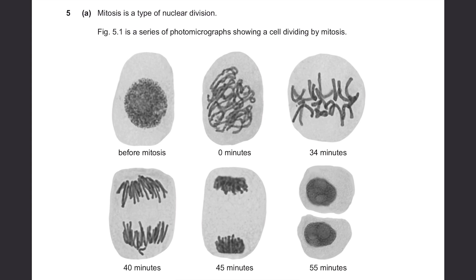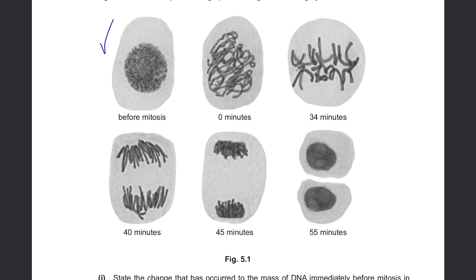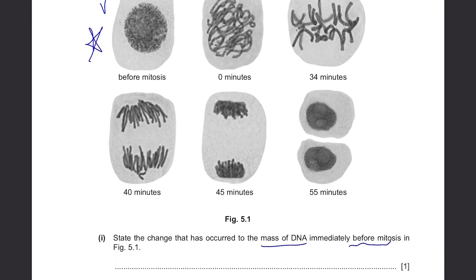Question 5, part A. Mitosis is a type of nuclear division. Figure 5.1 is a series of photomicrographs showing a cell dividing by mitosis. State the change that occurred to the mass of DNA immediately before mitosis. You can't really figure this out from the diagram — you just need to know it. Right before mitosis, the DNA will double, or you can say it increases, to be ready when cells divide later on.